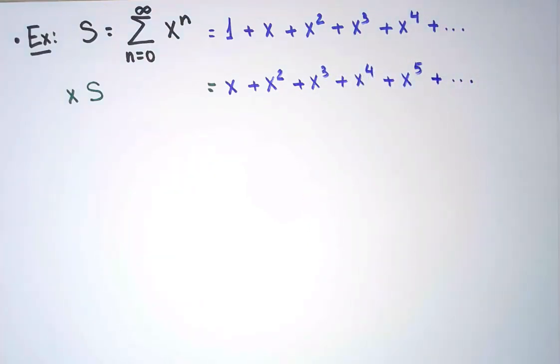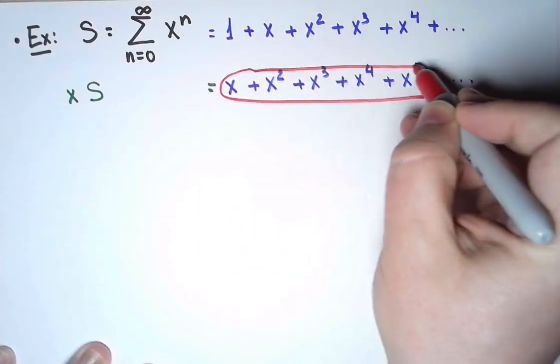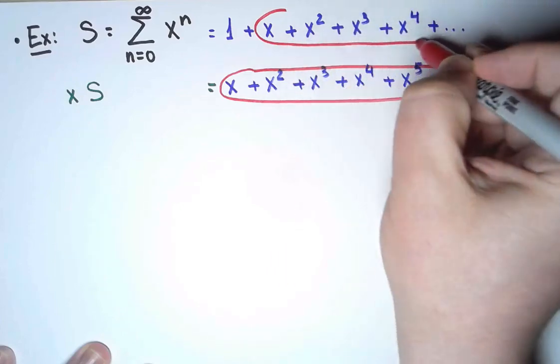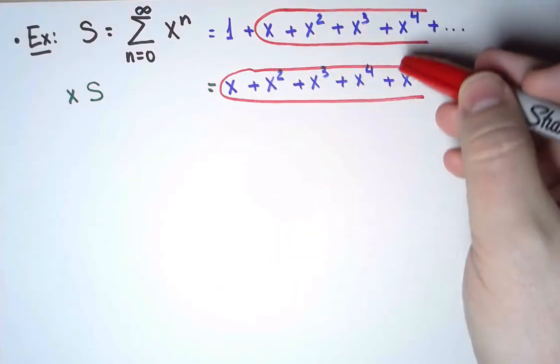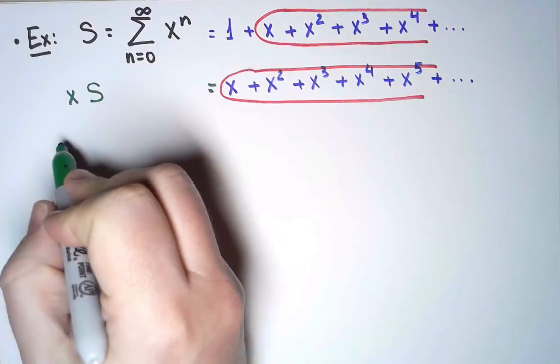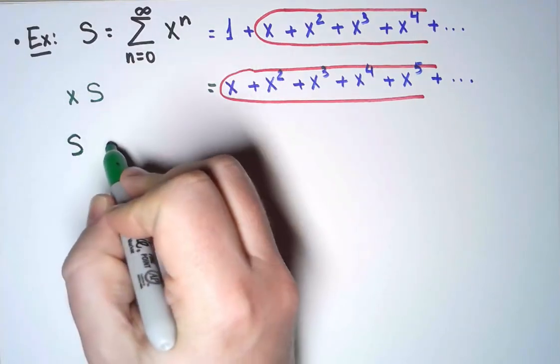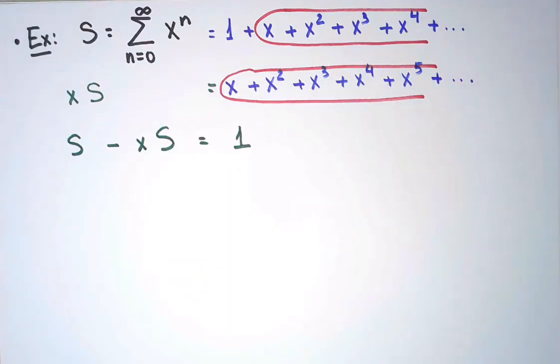And now, looking at both lines, the tails of the sums are the same. All the terms I'm getting in the second line are exactly the terms I'm getting in the first line, except for the 1. So if I subtract both lines, all the terms will cancel, except for the 1. And I'm going to do exactly that. I'm going to take s in the first line, minus xs in the second line, and I'm going to get 1, and all the other terms cancel.